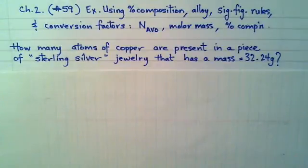This example is at the end of chapter 2, it's number 59, if you're following along in the text, and if not, we've written it out here anyway. So again, using the idea of conversion factors and expanding on those, expanding our repertoire of conversion factors to include Avogadro's number and molar mass, and to include ones that we've already used, like percent composition, and ideas of alloy, which is a solid solution.